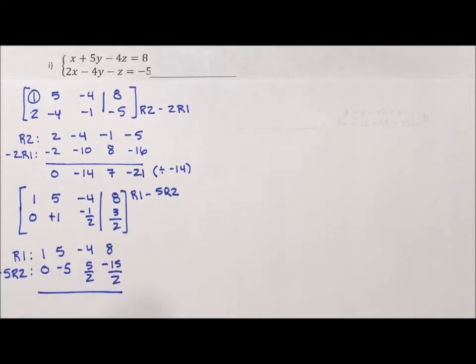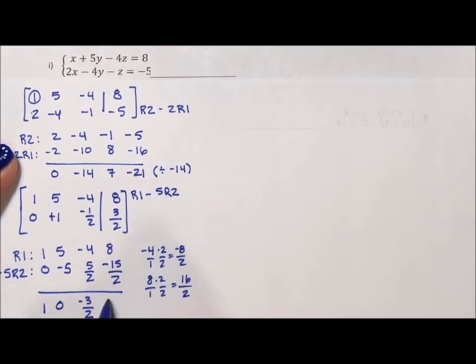And then, of course, I'm going to add down. 1 plus 0 is 1, 5 minus 5 is 0. The negative 4 times 2 over 2 is negative 8 halves. So negative 8 plus 5 is a negative 3 halves. 8 over 1 times 2 over 2 is 16 halves. 16 minus 15 is 1.